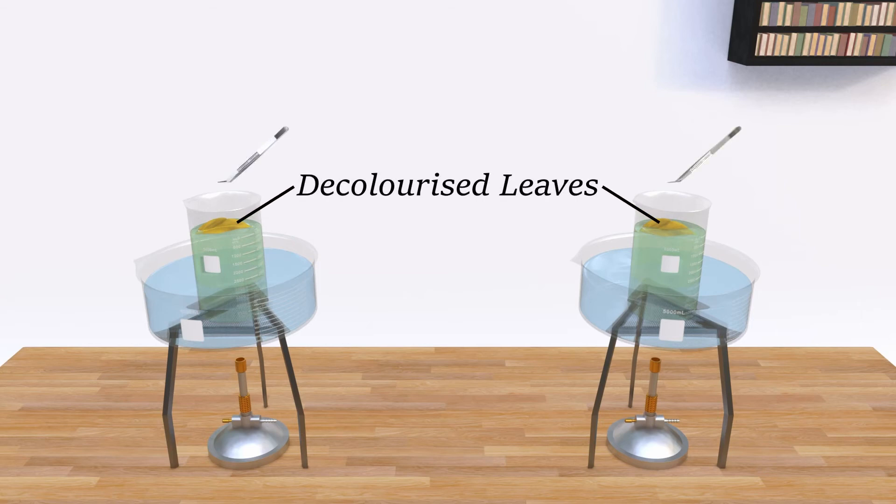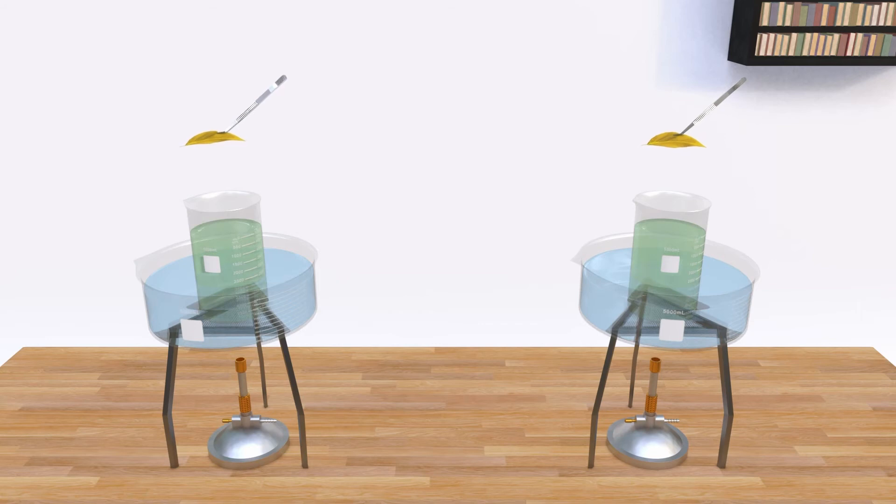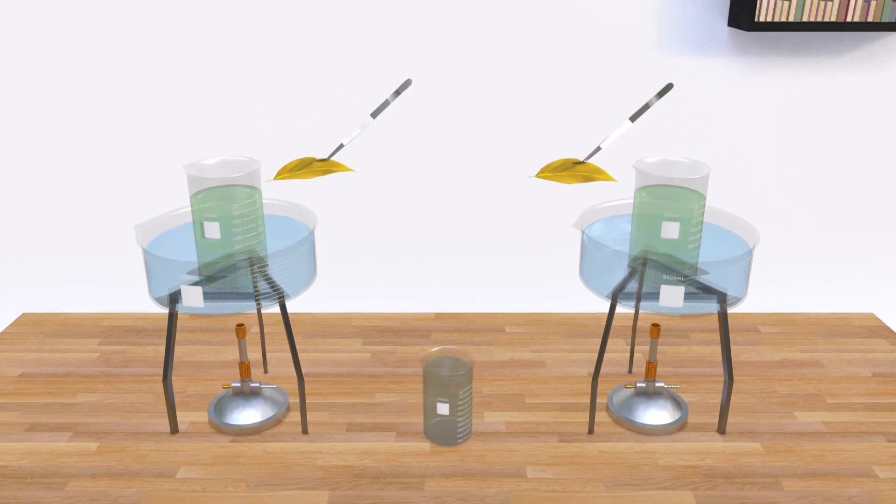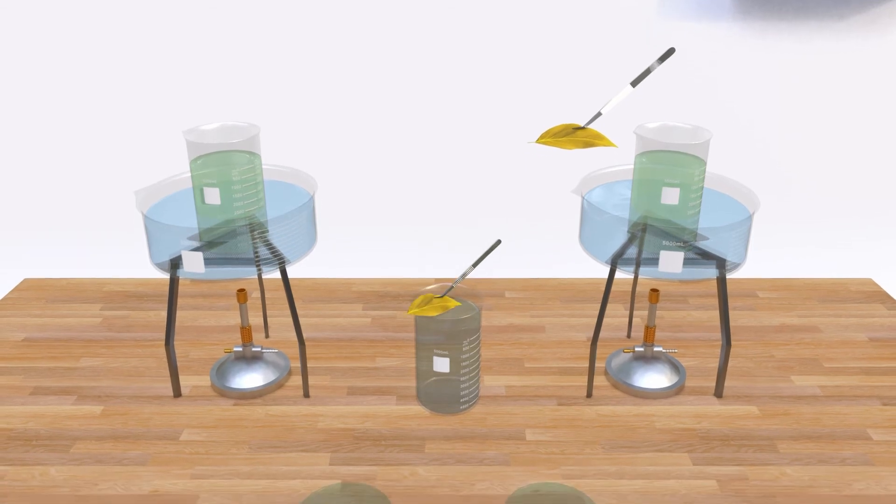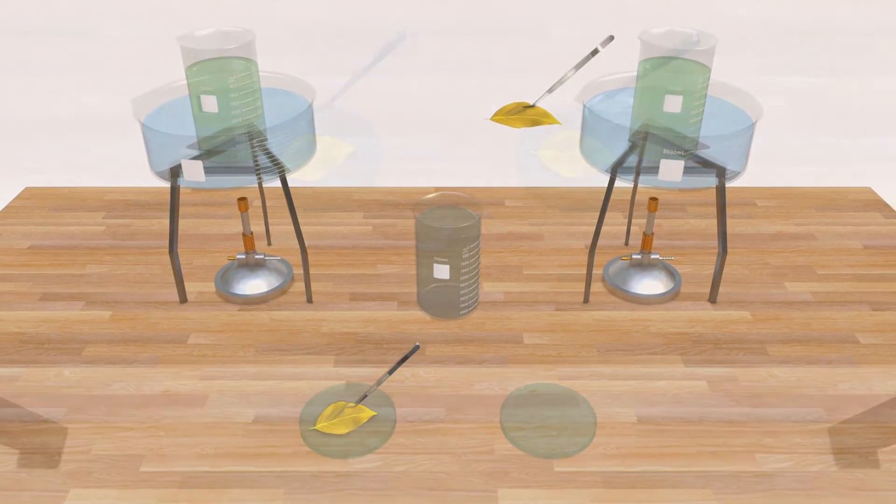Now remove the leaves from alcohol and wash in water so any chlorophyll attached to it is washed off the leaves. Keep each leaf in a separate petri dish.